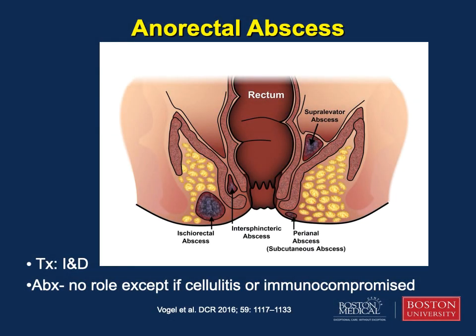Anorectal abscesses are defined by the anatomic space in which they develop and are classically divided into four categories. A perianal or subcutaneous abscess is superficial, typically visible on external inspection, and does not usually extend into any deep rectal or pelvic space. An ischiorectal abscess traverses the external anal sphincter and extends into the ischiorectal space. Intersphincteric abscesses are contained between the internal and external anal sphincters and are often not visible on inspection. Supralevator abscesses are proximal to the internal anal sphincter and are not visible on external inspection. The primary treatment of abscess remains incision and drainage.